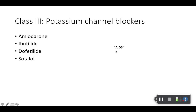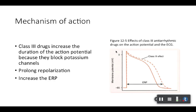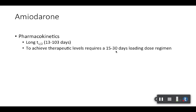Class 3 — these are the potassium channel blockers. There's a list there, and the mnemonic is 'AIDS' — that can help you maybe memorize which ones are potassium channel blockers. Mechanism of action take-home point: they block potassium channels.